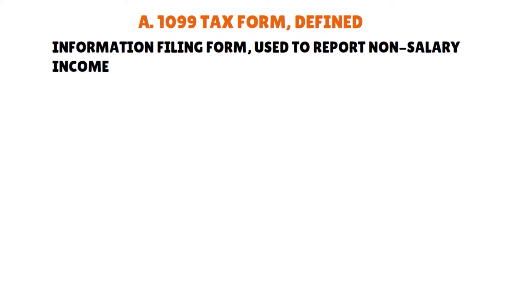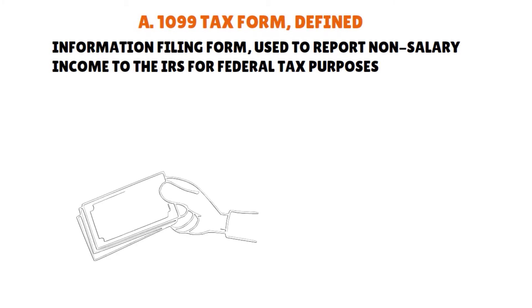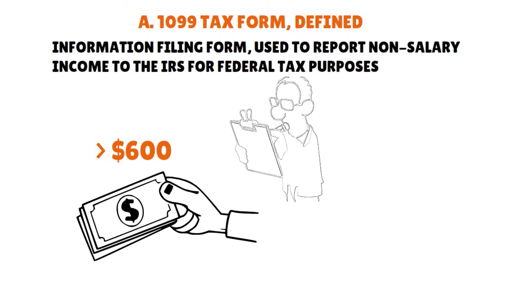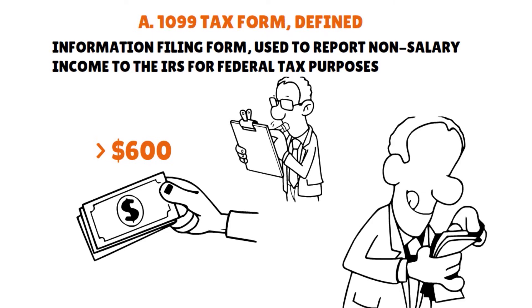There are about 20 variants of 1099s, but the most popular is the 1099-NEC. If you paid an independent contractor more than $600 in a financial year, you'll need to complete a 1099-NEC. An individual can also make money from tax dividends, prize winnings, interest income, IRA distributions, state tax funds, miscellaneous government payments, the sale of personal property, or even credit card debt forgiveness — those types of income are reported on other types of Form 1099.